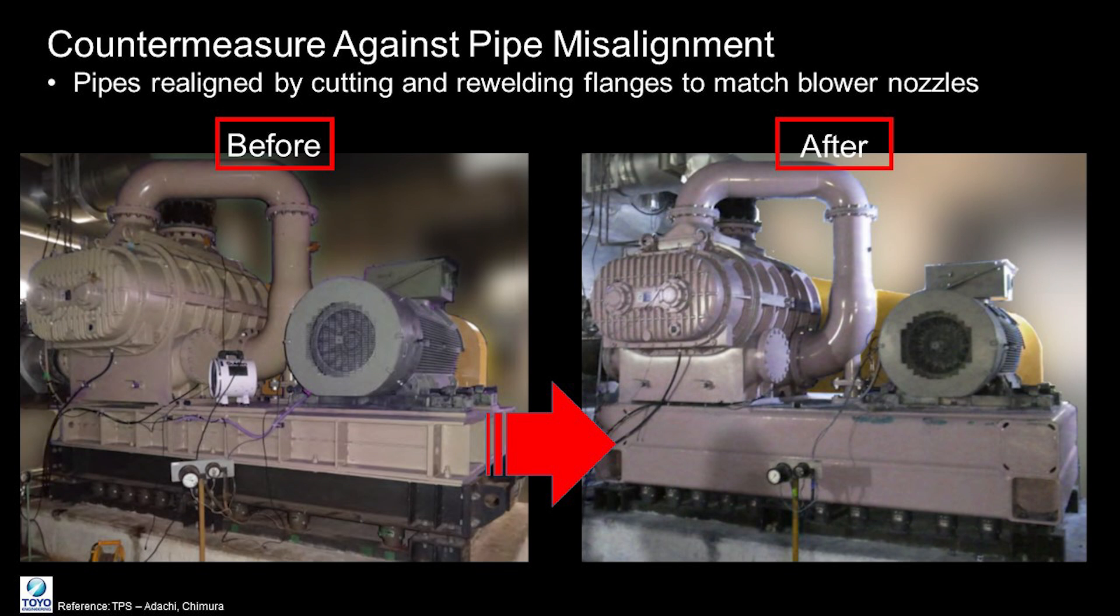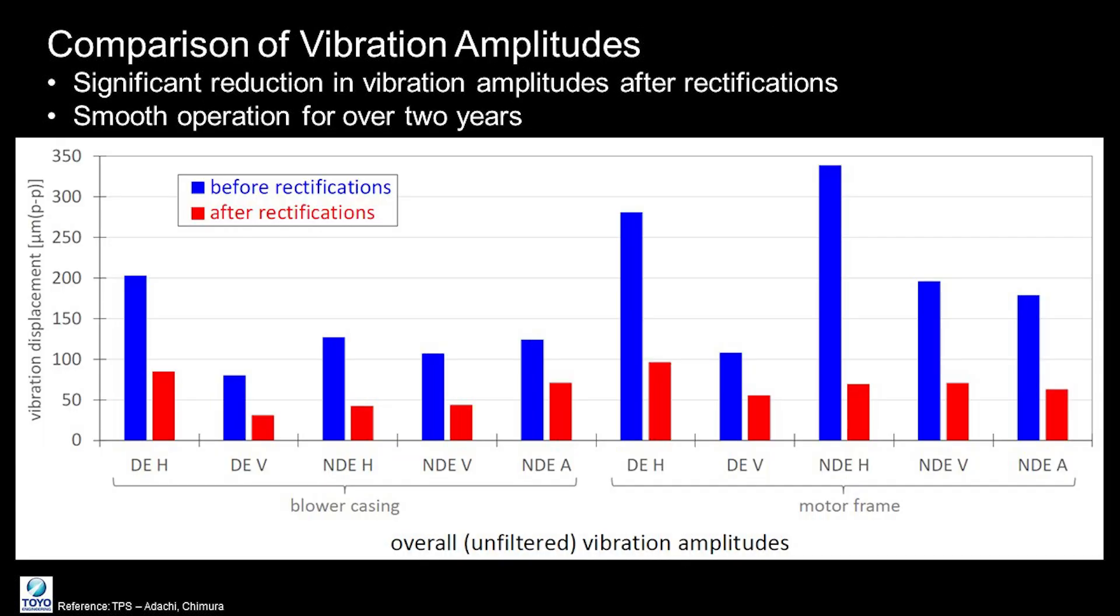After implementing the base plate rectification and pipe realignment, large reductions in vibration amplitude were measured throughout the equipment. The system has been running smoothly without issues for many years after these fixes.